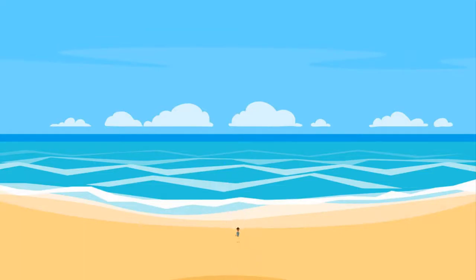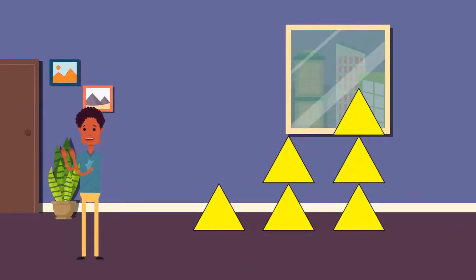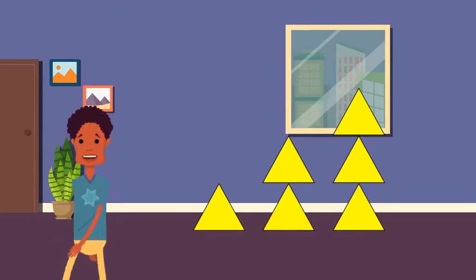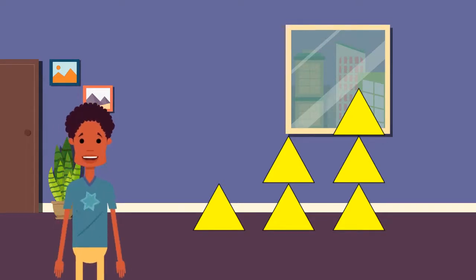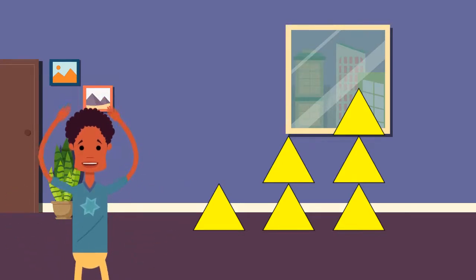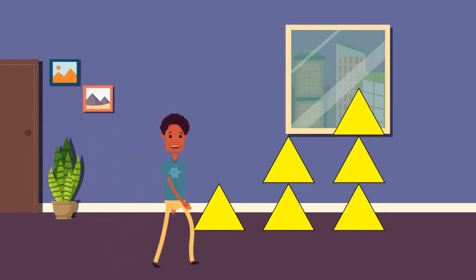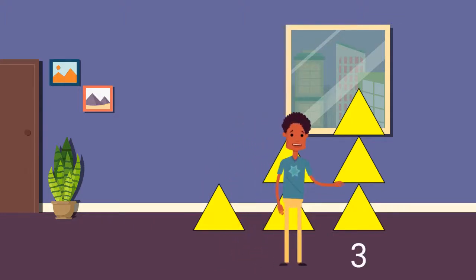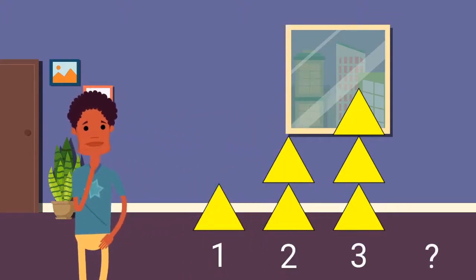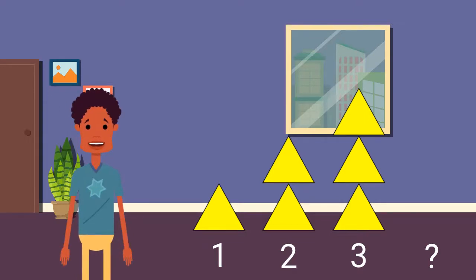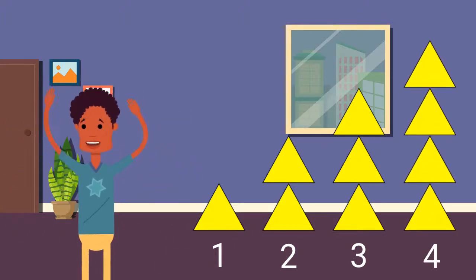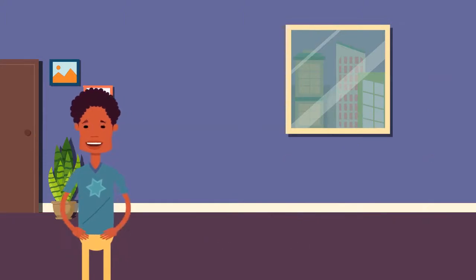Let's look at one more example of growing patterns. We can use shapes to create and extend growing patterns. What shape is being used for this growing pattern? You got it — they are triangles! In this growing pattern the number of triangles grows each time a new column is added. First there is one triangle, next there are two triangles stacked, then three triangles stacked. What would come next? Way to go — the next part will be four triangles stacked.